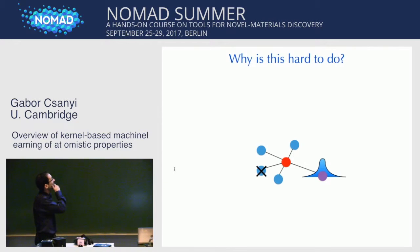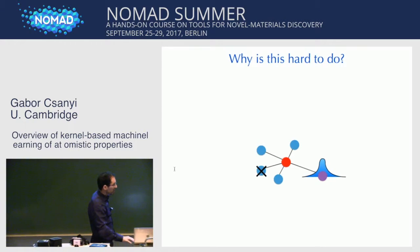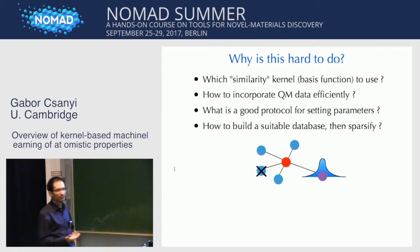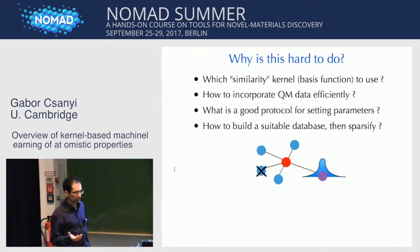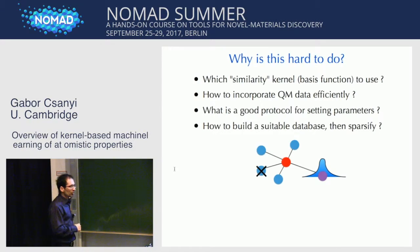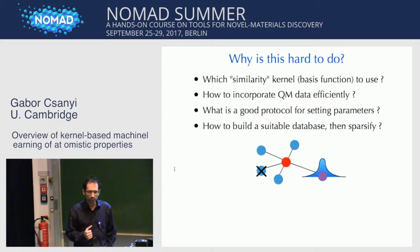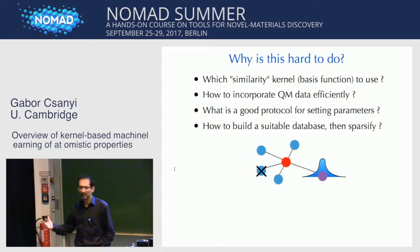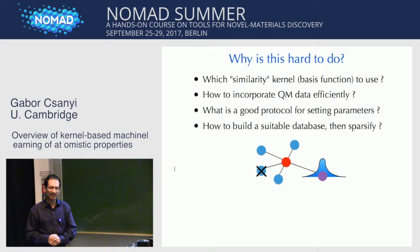Why is this hard to do? Imagine we're trying to evaluate a function at a red location — I have database points at blue locations with some basis function. There are a whole bunch of parameters or choices to be made: which kernel is best? Are there kernels that always work so that I don't have to think about them? Are there kernels with parameters that are easier to optimize? How do we incorporate quantum mechanical data in the most efficient way? What is a good protocol for setting parameters? The balance between human effort and machine effort has to be considered.